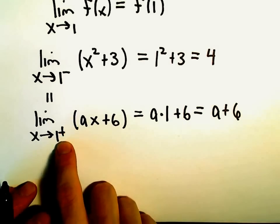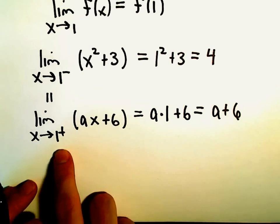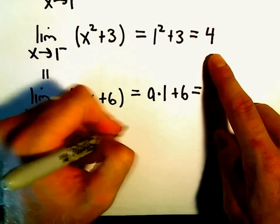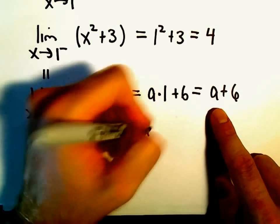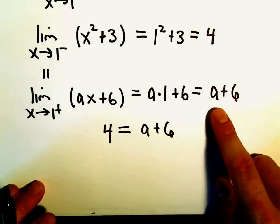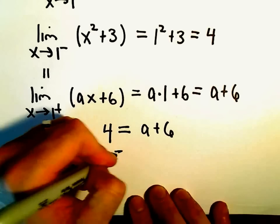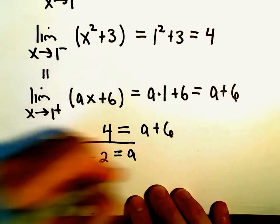But for the limit to exist, the left-hand limit has to equal the right-hand limit. So that would tell us that that means that 4 would have to equal a plus 6. Well, we can just subtract 6 from both sides, and that would give us negative 2 as our value for a.